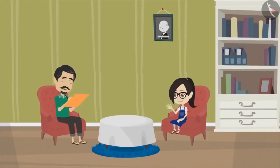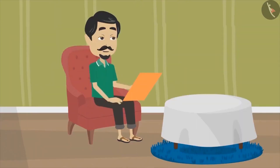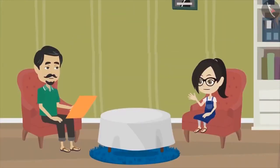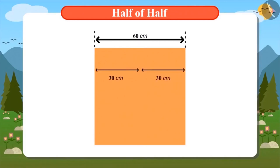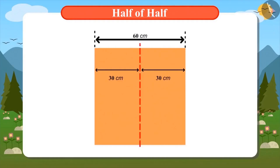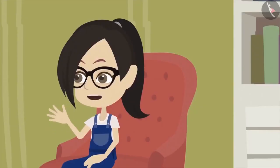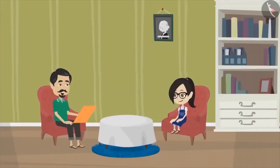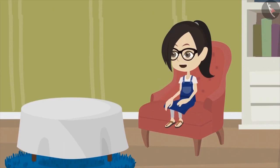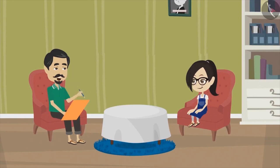What does one-fourth part mean? One-fourth part means one of the four parts of a thing or shape. Do you know what is half? When a thing is divided into two equal parts, one part will be half of that thing. In the same way, if we divide a thing into four equal parts, then one part is called one-fourth of that thing. But how do we divide the field into four equal parts? First we will divide the field into half and then divide the halves into halves again.